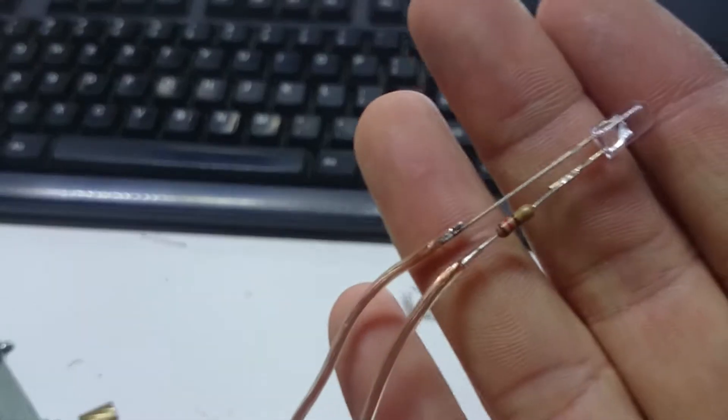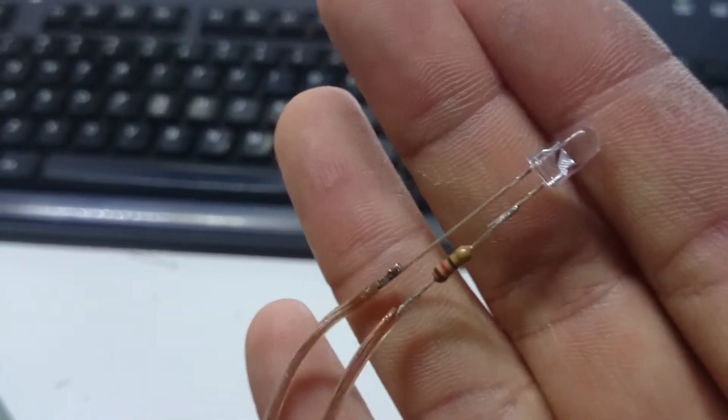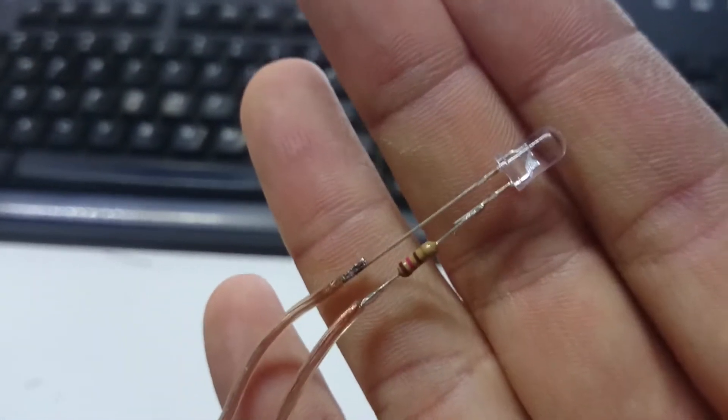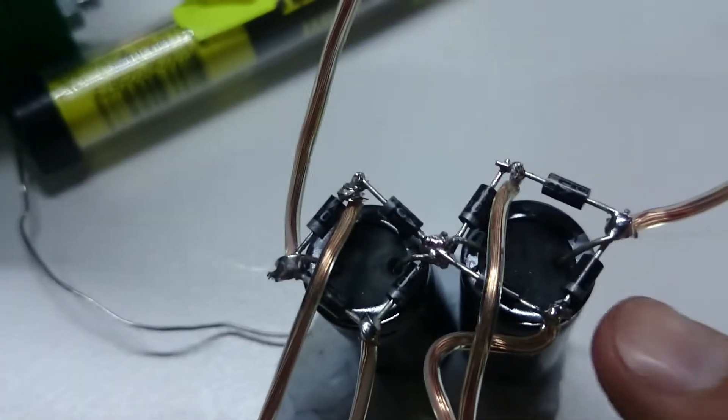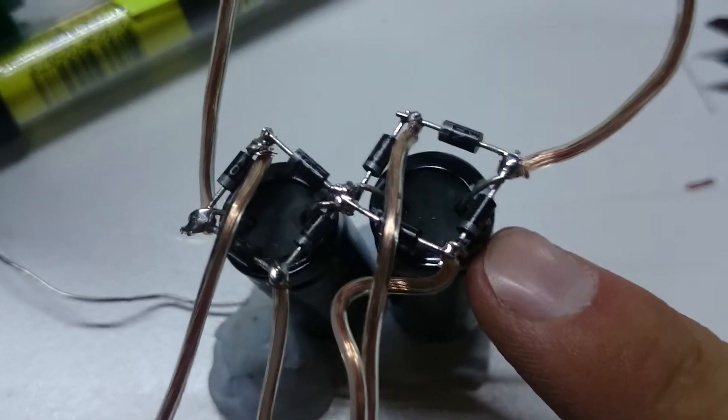What we have here is a 120 ohm resistor and a sunset red LED. We have two 220 microfarad capacitors and two bridge rectifiers made out of 1N4004 diodes.